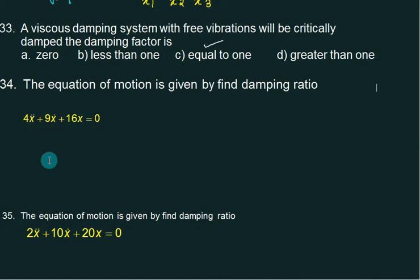Are you familiar with this equation? Plus 9 divided by 4. X dot plus 16 divided by 4 is 4X equals to 0.